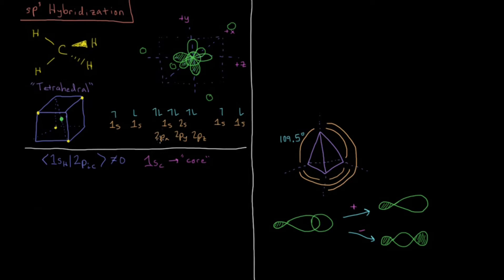But we want to take the 2s, 2px, 2py, and 2pz of the carbon to form our hybrid orbitals, which are going to be sp3 hybrid orbitals as we have combined 1 s orbital and 3 p orbitals to get them.